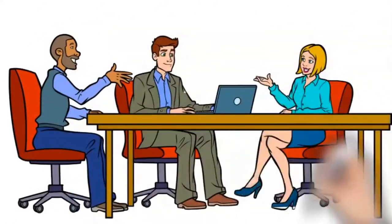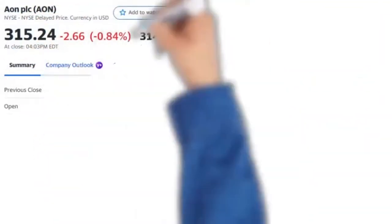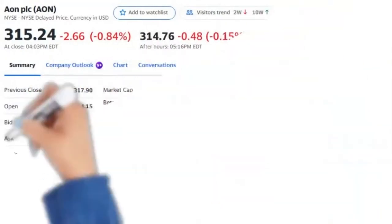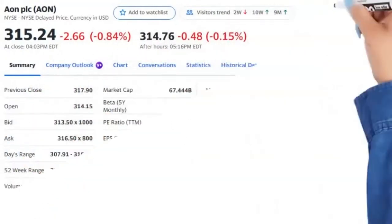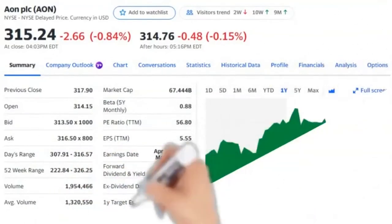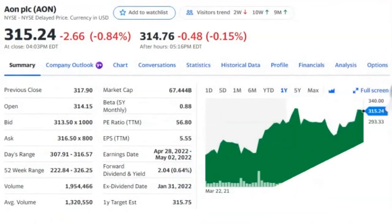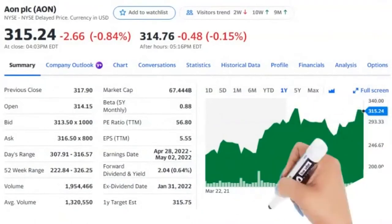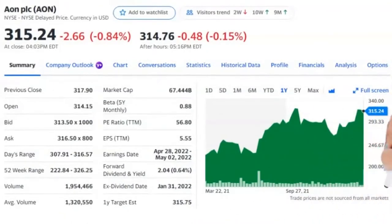On March 22, 2022, Aon had a closing price of $315.24 per share. $10,000 will get you 31 shares. Volume 1,954,466. Market capitalization 67.444 billion.